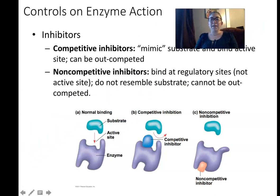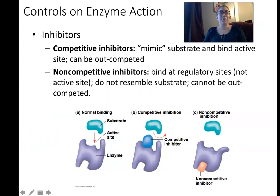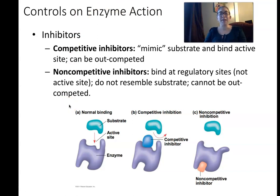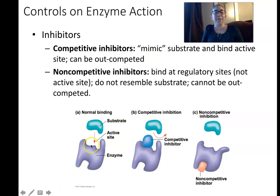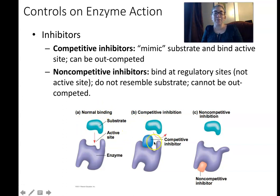Enzymes can also be regulated by inhibiting their function directly. There are two broad classes of inhibitors: competitive and non-competitive. Competitive inhibitors mimic the substrate — they look a lot like the substrate and compete for the active site. When a competitive inhibitor binds, it blocks the active site so the normal substrate can't bind. Competitive inhibitors can be outcompeted — whichever molecule is present in greater amounts will win out.